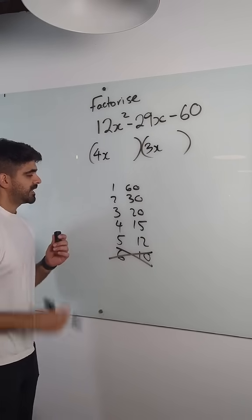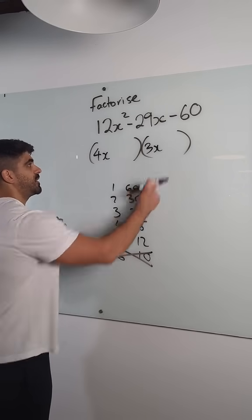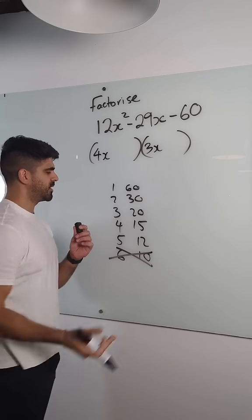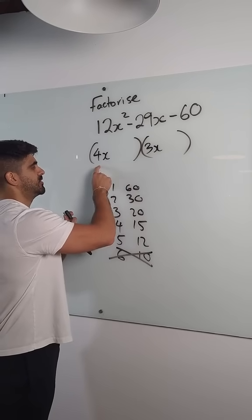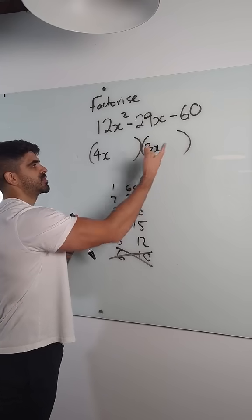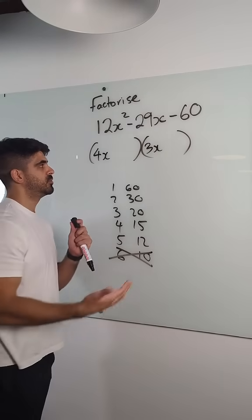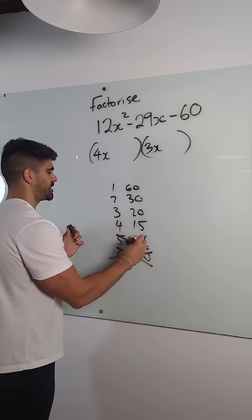5 and 12, if this is going to work, the 12 has to go here. But that can't work either. The 12 can't go here because it's even, and the 12 can't go here because 3 and 12 are both factors of 3, which means you'd be able to factorize. So this is not going to work.